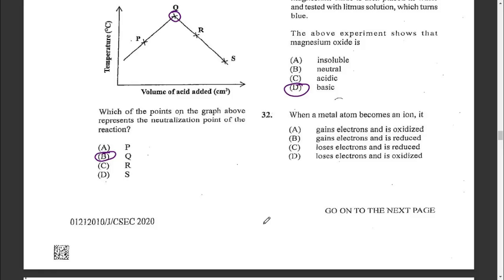Question thirty-two: when a metal atom becomes an ion, it loses electrons. The loss of electrons is oxidation. The options are: A — gains electrons and is oxidized, B — gains electrons and is reduced, C — loses electrons and is reduced, or D — loses electrons and is oxidized. The answer is D.